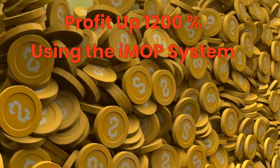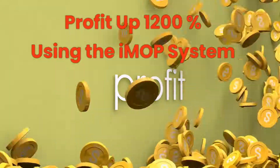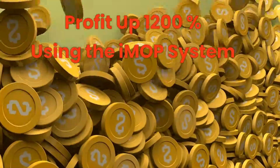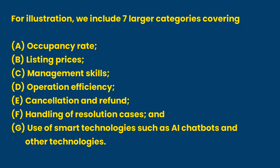There are many factors that can affect the revenue and profit of a short-term rental service. For illustration we include seven larger categories covering such aspects as: A) occupancy rate, B) listing prices, C) management skills, D) operation efficiency, E) cancellation and refund, F) handling of resolution cases, and G) use of smart technologies such as AI chatbots and other technologies.